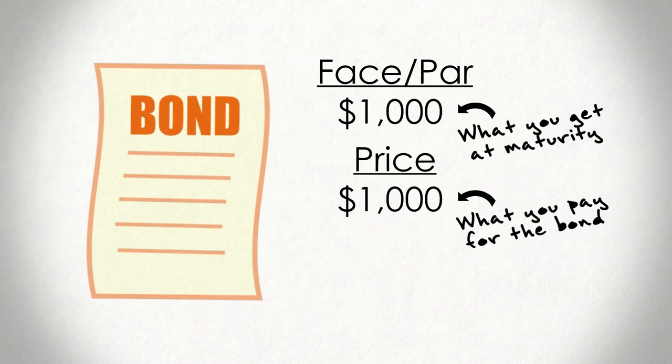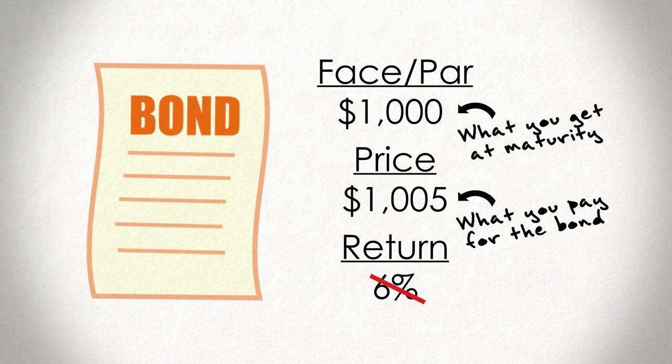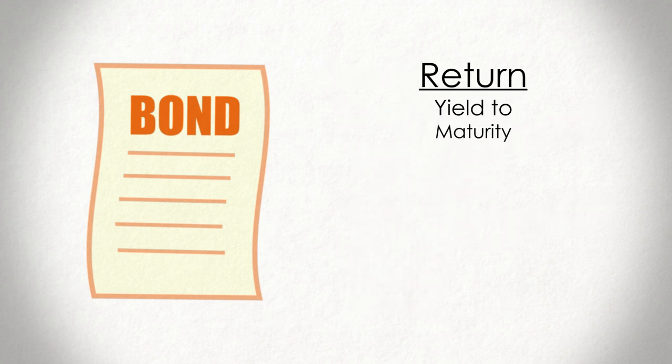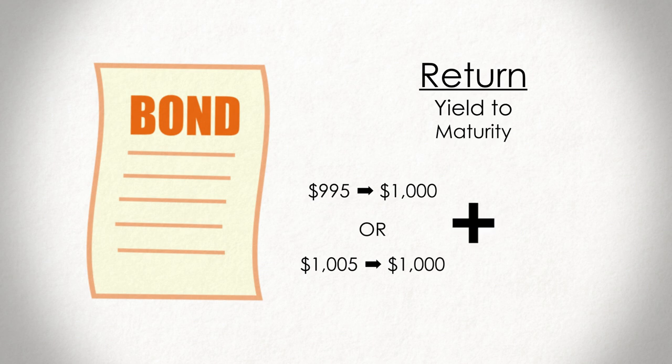Because the price of a bond may differ from its actual par value, your actual return likely won't equal the coupon rate, but will rather be closer to the yield to maturity, an estimate of your annual return if you hold the bond until maturity and interest rates don't change.